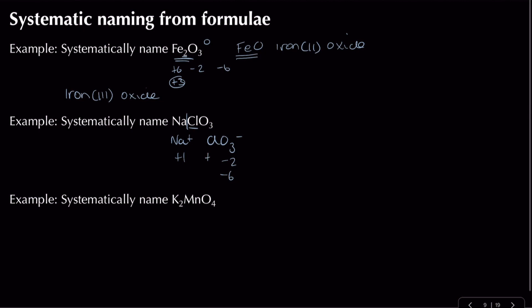The oxidation state of chlorine is plus five. To name this compound: sodium, then chlorate, and because chlorine's oxidation state is plus five, we put a five in brackets after chlorate — giving sodium chlorate(V).